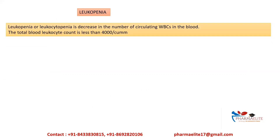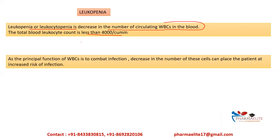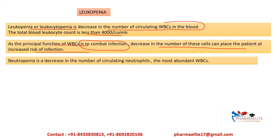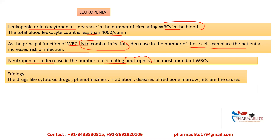Leukopenia, or leukocytopenia, is a decrease in the number of circulating WBCs, with a total count less than 4,000 per cubic mm — below the normal range. Since the principal function of WBCs is to combat infection, a decrease places the patient at higher risk of infection. Neutropenia is a specific decrease in circulating neutrophils. Causes of leukopenia include cytotoxic drugs, phenothiazines, irradiation, and diseases of the red bone marrow.